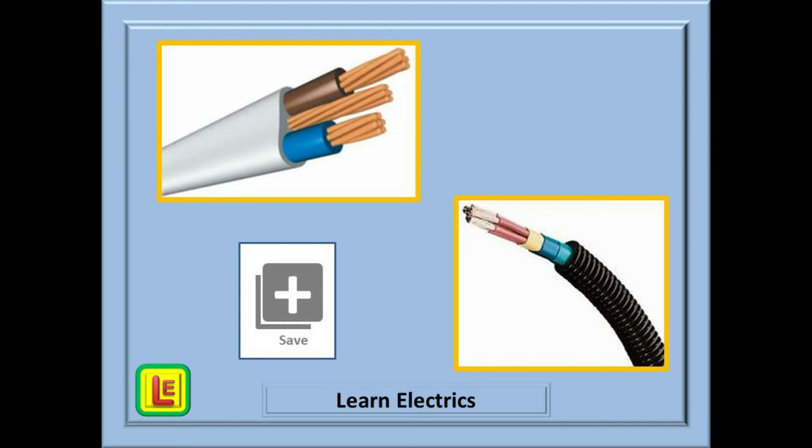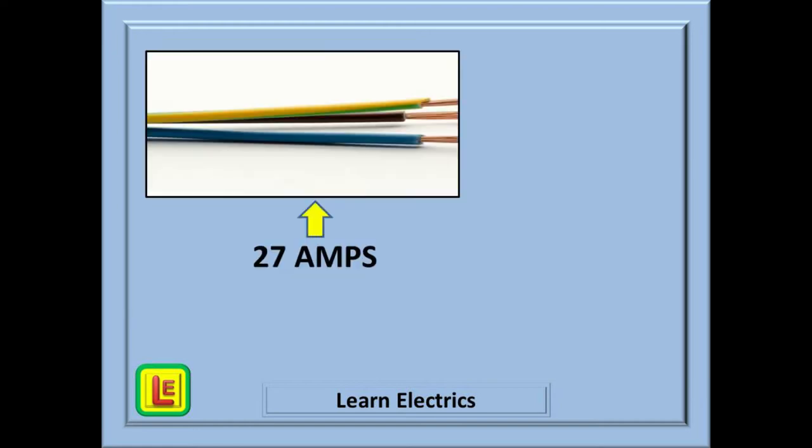And not just conduit inside walls, in brickwork, in the loft. Just about any location will affect the cable's ability to lose heat. And this is the purpose of the tables. Before we move on, you may want to press the save button at this stage. Also, if you are going to follow along with the wiring regulations book, this information is found in Appendix 4. I am using the blue 18th edition book for this video, and I am starting at page 386.